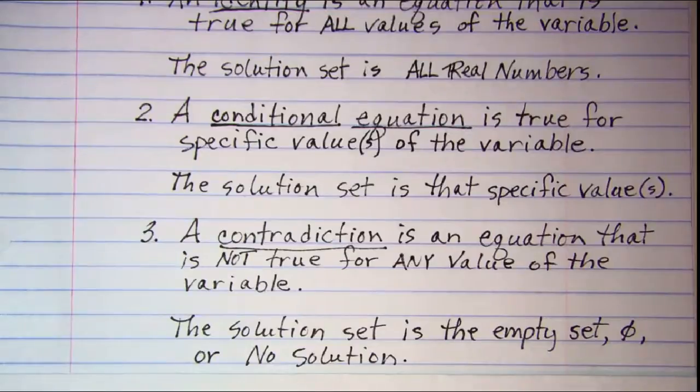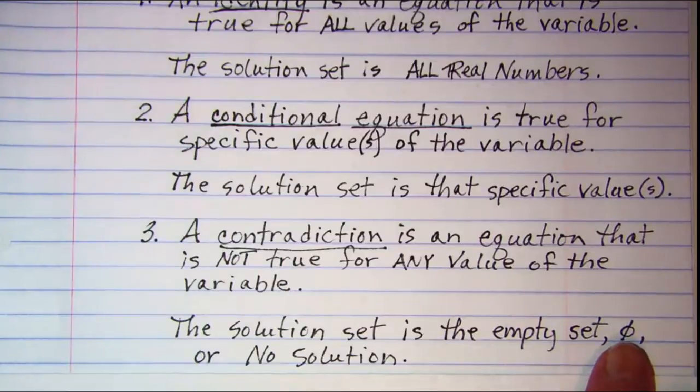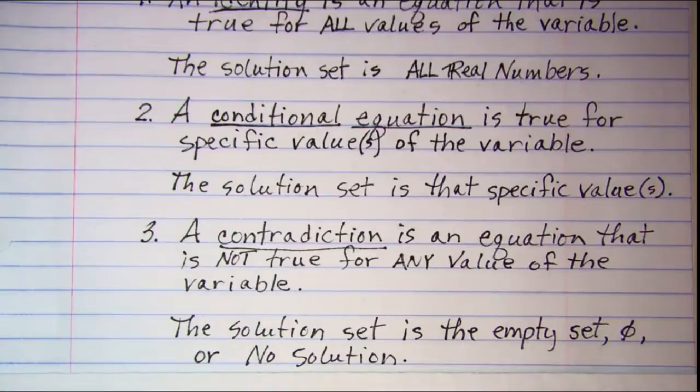Lastly, a contradiction is an equation that is not true for any value of the variable. The solution set is the empty set, which you can show with this null set symbol, or you can just write no solution.